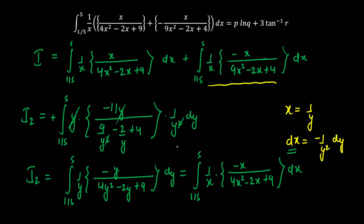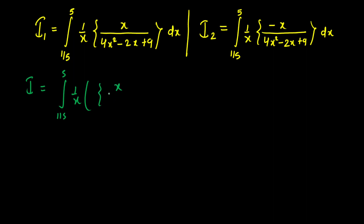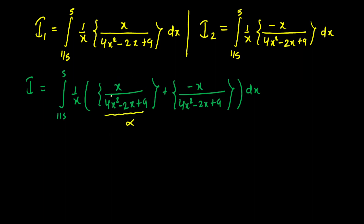Now let's simplify I1+I2. Adding them with the common limit 1/5 to 5 and factoring out 1/x, we get I = ∫(1/5 to 5) (1/x)·[{x/(4x²-2x+9)} + {-x/(4x²-2x+9)}] dx. If we call α = x/(4x²-2x+9), then inside we have {α} + {-α}.